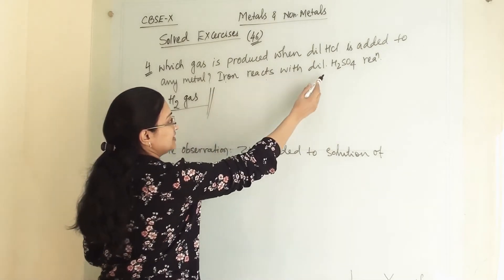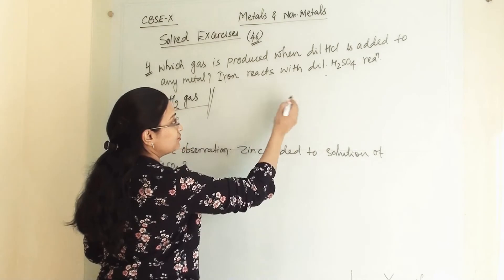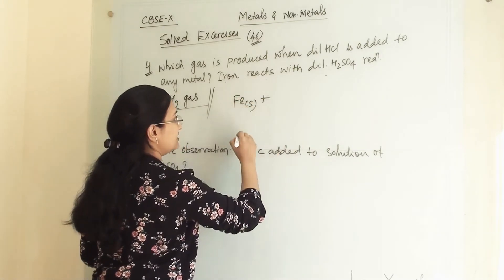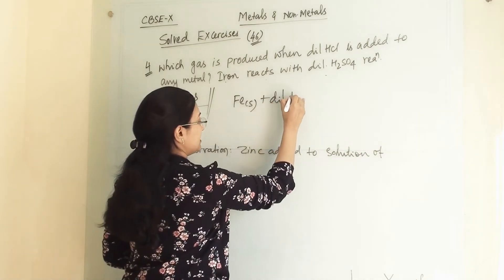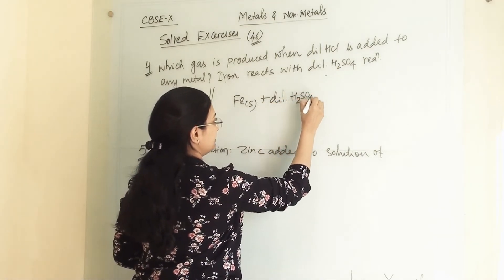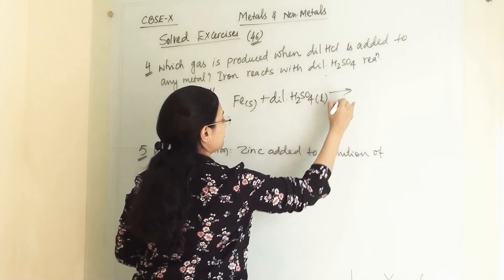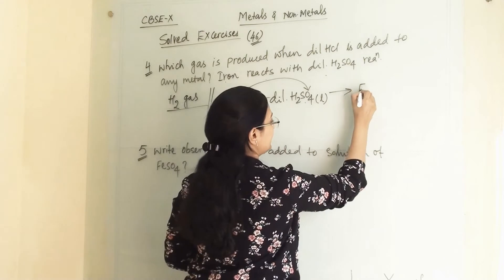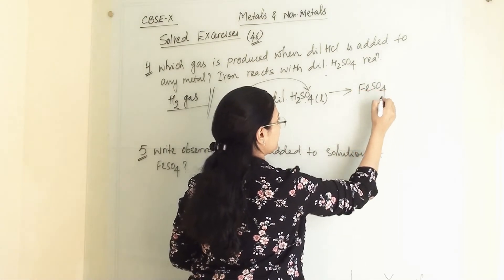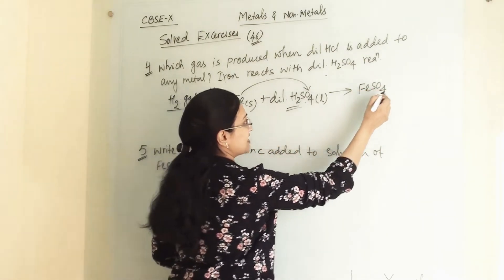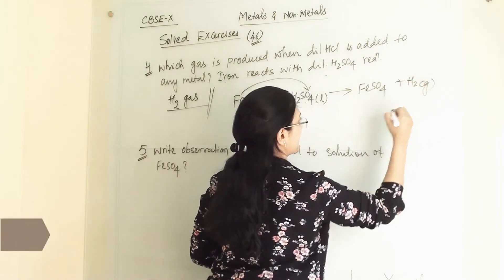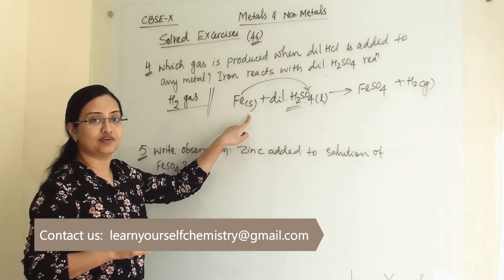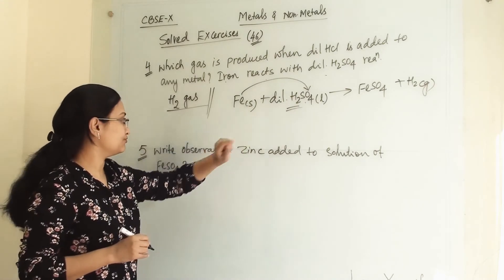Now we have to write the reaction when iron reacts with dilute H₂SO₄. Iron (Fe, solid) reacts with dilute H₂SO₄. Fe will react with SO₄ to give FeSO₄, and H₂ gas will be liberated. This is the reaction when iron reacts with dilute H₂SO₄.